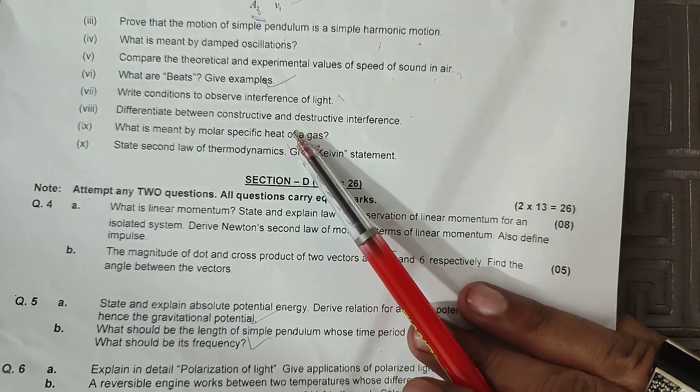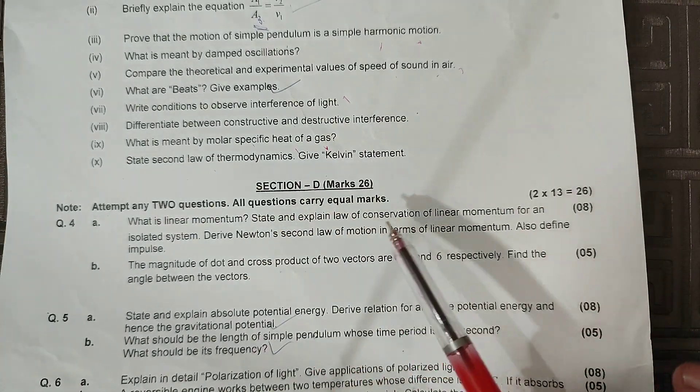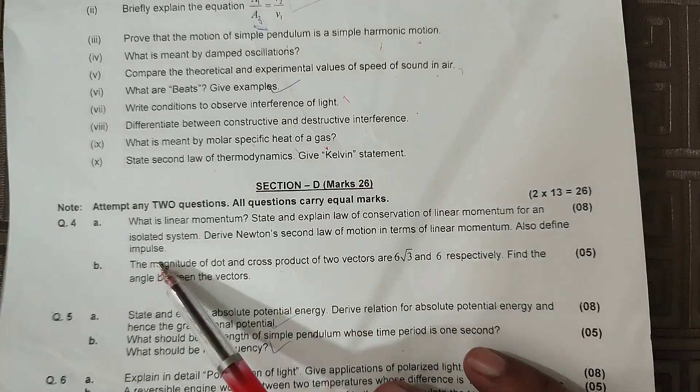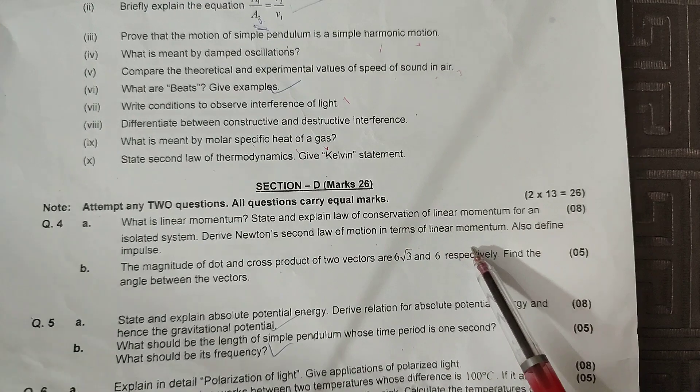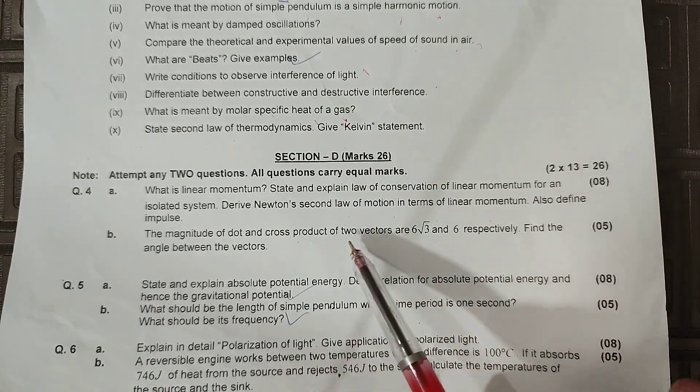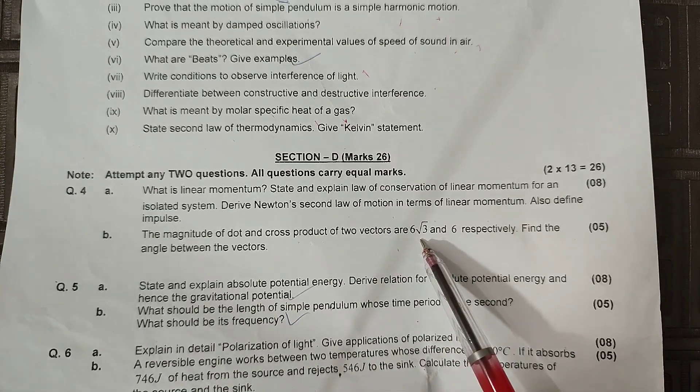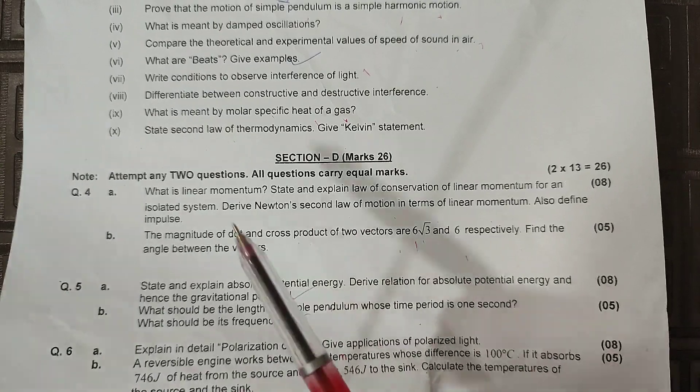Long questions: First you will get: What is linear momentum? State and explain law of conservation of linear momentum for an isolated system. Derive Newton's second law of motion in terms of linear momentum, also define impulse. Uske baad hai: The magnitude of dot and cross product of two vectors are 6 root 3 and 6 respectively. Find the angle between the vectors.